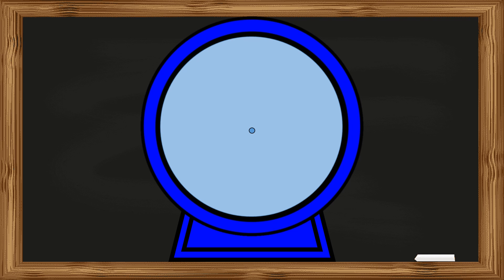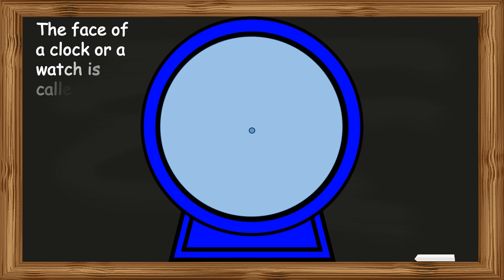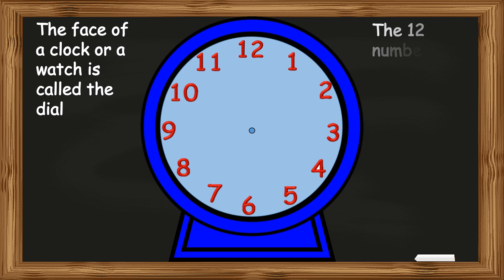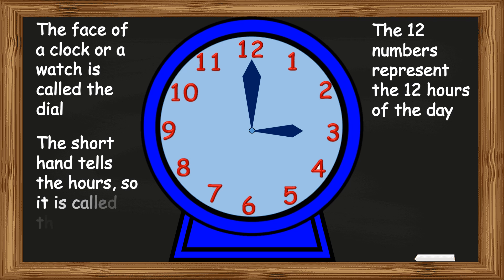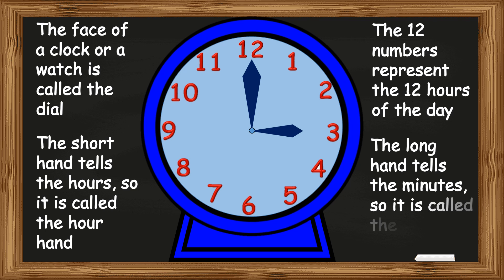As you know, we use a clock to tell the time in minutes and hours. The face of a clock or a watch is called the dial. You can see 12 numbers on the dial. The 12 numbers represent the 12 hours of the day. A clock has two hands, one short hand and one long hand. The short hand tells the hours, so it is called the hour hand.